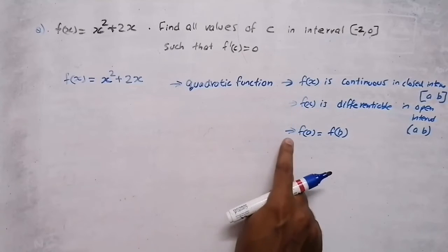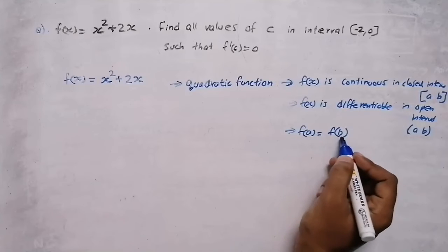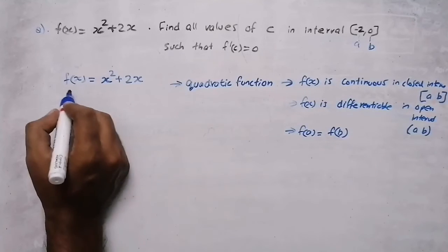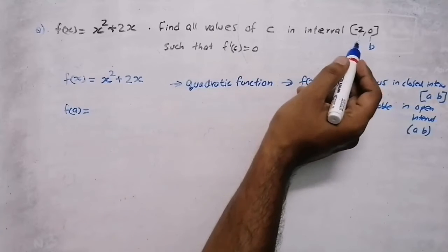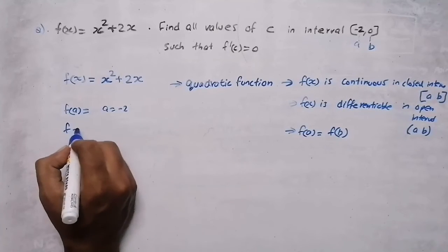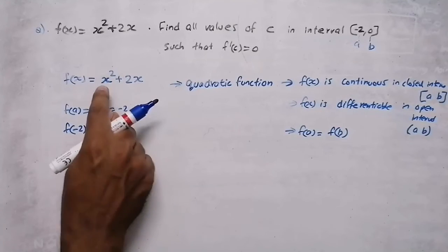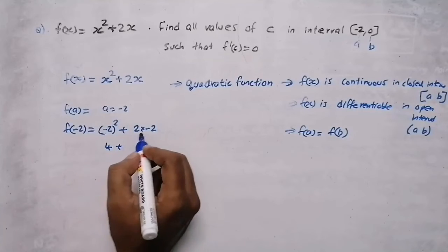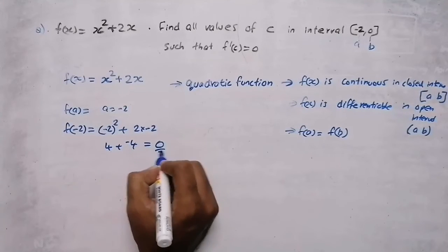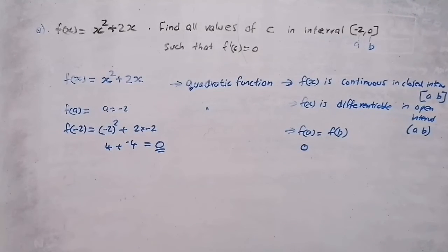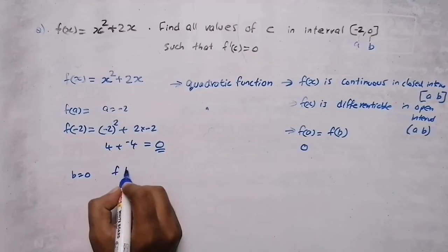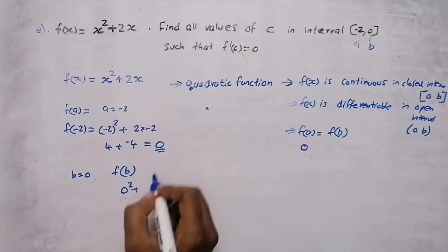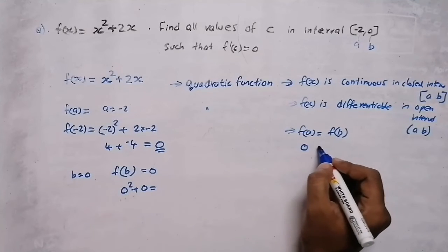After satisfying these two conditions, we need to check the third condition: f(a) = f(b). Here a = −2 and b = 0. We need to find f(−2): replacing x with −2 gives (−2)² + 2(−2) = 4 − 4 = 0. So f(a) = 0. Now f(b): replacing x with 0 gives 0² + 2(0) = 0. So f(b) = 0. Thus f(a) and f(b) are equal — the third condition is satisfied.